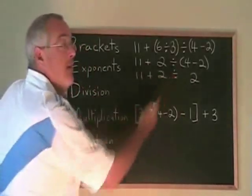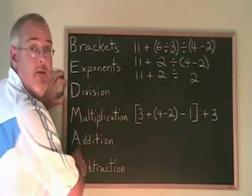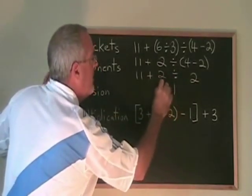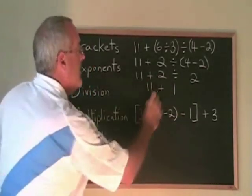Now we have a plus and a divided by. The D for division comes before the A for addition, so we're doing the divided by. 2 divided by 2 is 1. We copy down the 11 plus. We have 11 plus 1 and the answer is 12.